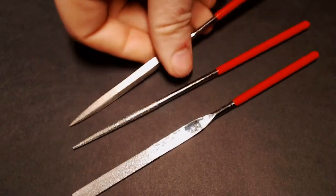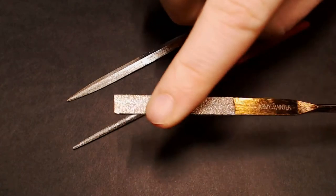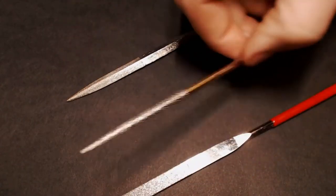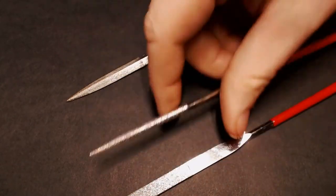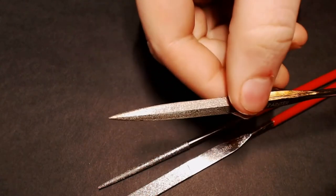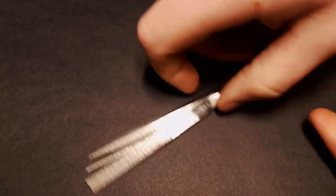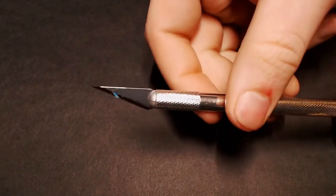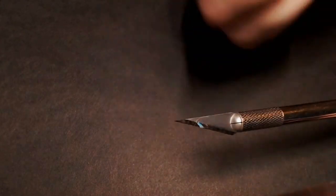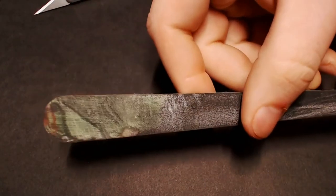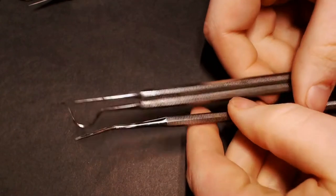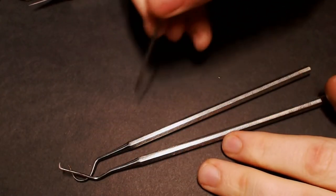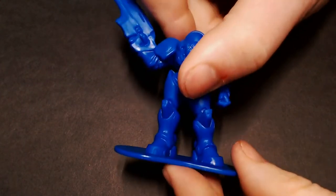Some of the stuff we're going to need for this is some files. This is the Army Painter file set, we've got a flat, a rat tail, and kind of a flat slash triangular file. Obviously a really sharp hobby knife and some sanding sticks, and these are some scribing tools, they kind of look like dentist tools, but they're called scribing tools, you can get those on Amazon.